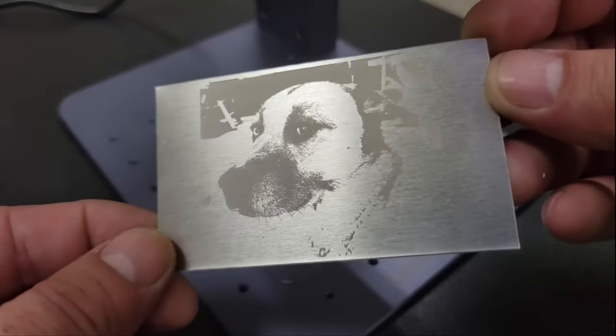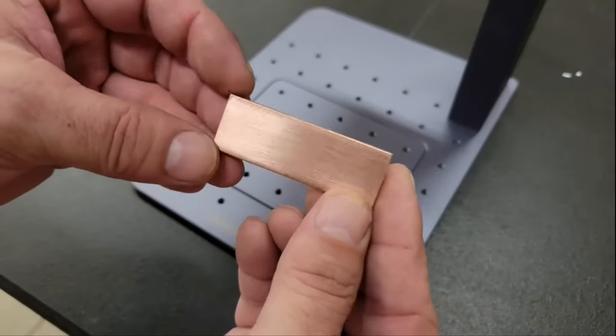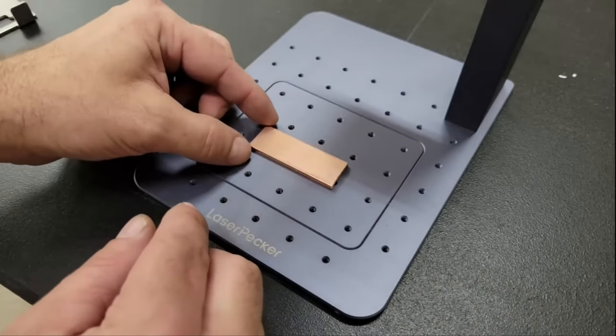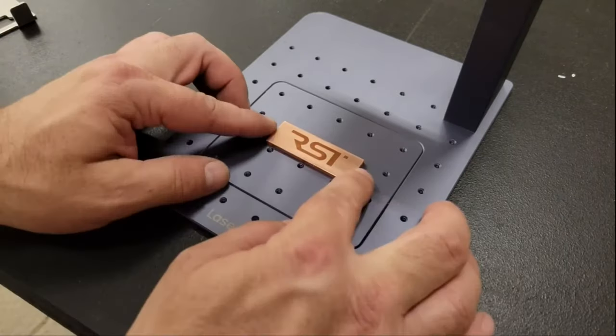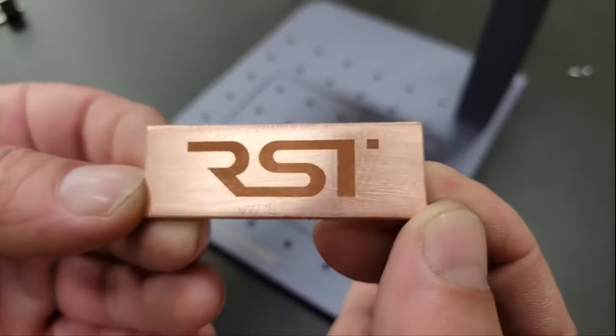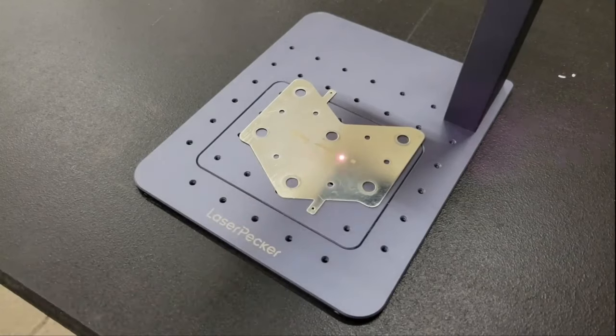Here you can see that the laser does a nice job etching both coated and bare aluminum. Then I tried some bare copper and nickel plated copper before moving on to etching some chrome, steel and anodized aluminum tools in the workshop, all with great results.